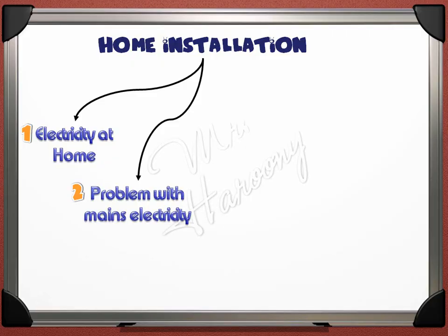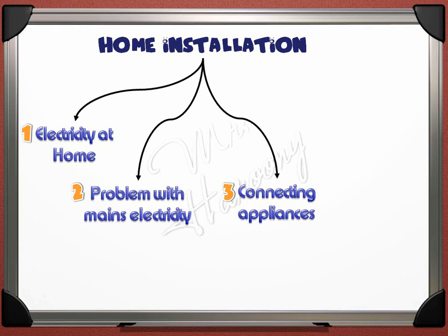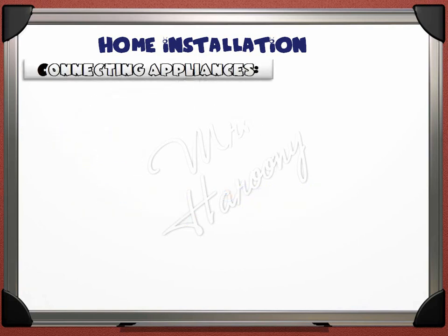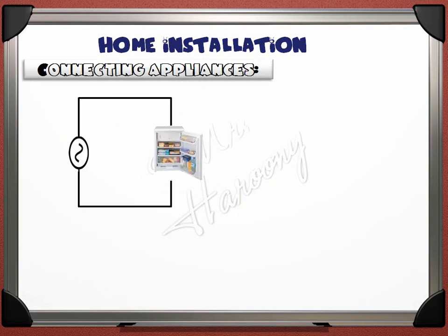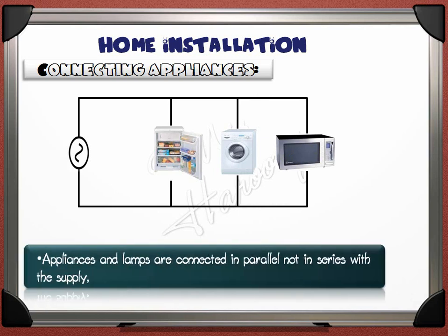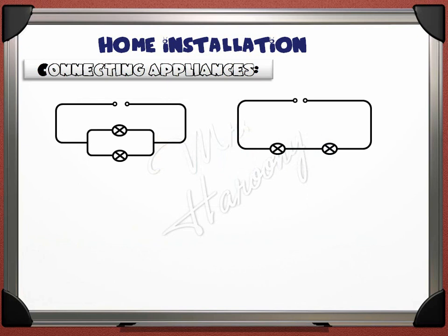Now we will see how appliances are connected together and to the main supply. There are two known types of connections: series and parallel. The better choice for homes is the parallel connection for many reasons. Let's compare between two bulbs connected in parallel and two other bulbs connected in series.